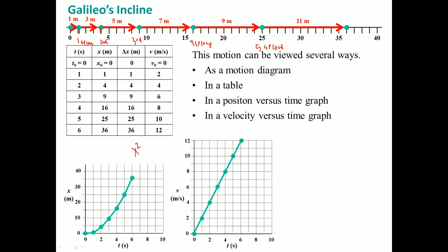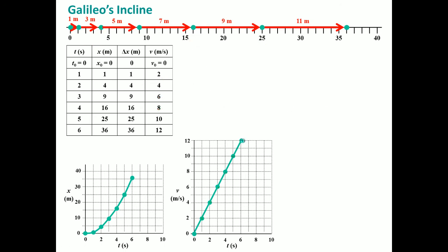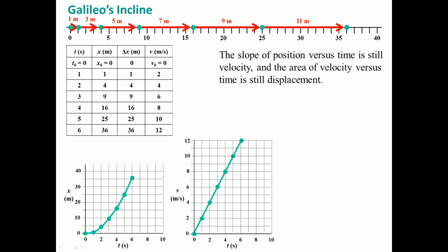If we graph the velocity versus time graph, you should see a constant slope. The velocity goes from 2, then becomes 4, then 6, then 8, then 10, and so on.